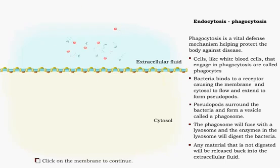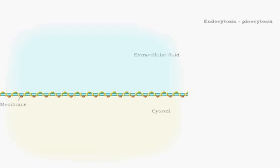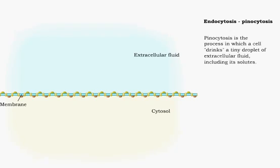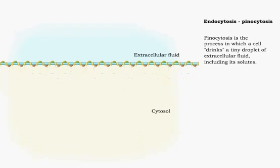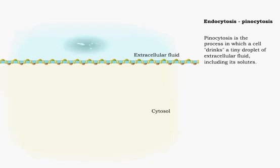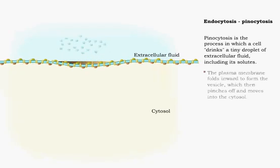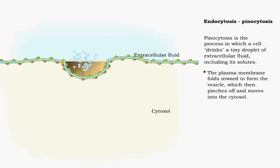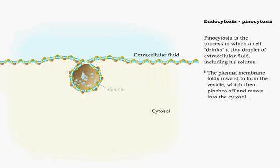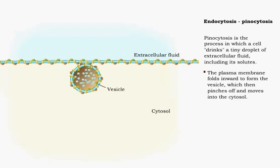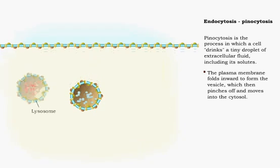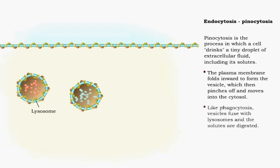Pinocytosis is the process in which a cell drinks a tiny droplet of extracellular fluid, including solutes. The plasma membrane folds inward to form the vesicle, which then pinches off and moves into the cytosol. Like phagocytosis, vesicles fuse with lysosomes and the solutes are digested.